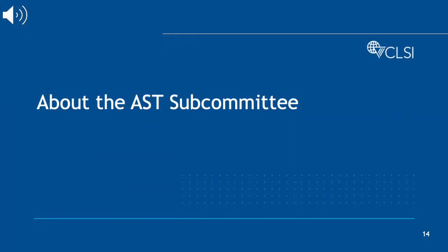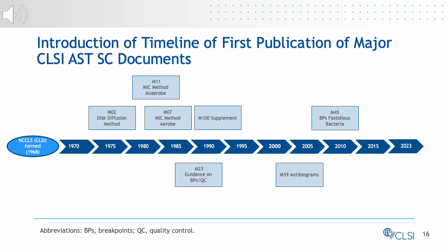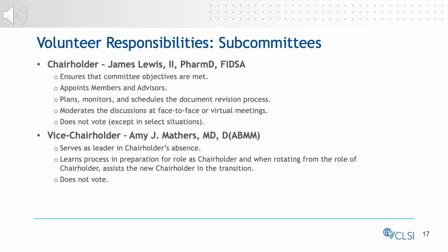Next, let's talk more about the AST Subcommittee. The mission of the AST Subcommittee can be found here and is also listed in the front of each AST document. CLSI's AST Subcommittee was formed in the 1970s with M7 as its first document. The first publication of M100 was in 1990. M100 publishes annually, and in 2023, CLSI will be publishing the 33rd edition. Subcommittees are overseen by volunteer chairholders. The current AST chairholder is James Lewis II, and the vice chairholder is Amy J. Mathers, MD. Together, they oversee the subcommittee and the AST meetings.